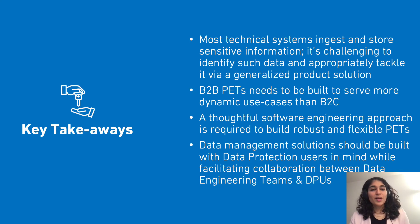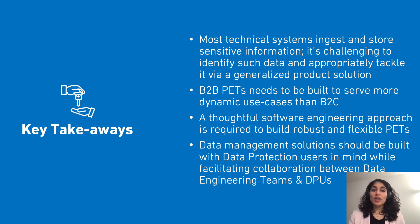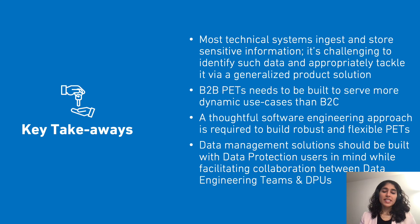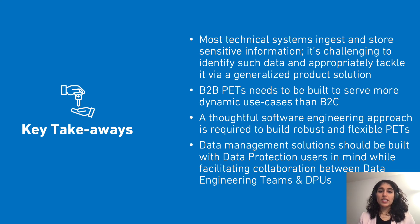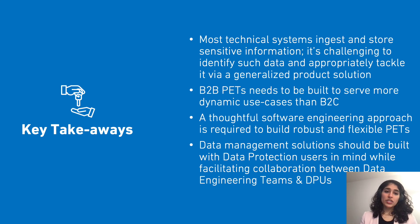That brings us to conclusions. Most technical systems ingest and store sensitive information. It's challenging to identify such data and appropriately tackle it via a generalized product solution. We walked through specifics of how to break down the problem and what a potential solution can look like. B2B privacy enhancing technology needs to be built to serve more dynamic use cases than B2C, where often there are innate limits to how the system can be deployed or used. A thoughtful software engineering approach is required to build robust and flexible privacy enhancing technologies. Traditional approaches often end up with restrictive software that is not useful enough, or worse, functional software which undermines user privacy. We highlighted this by ensuring that the solution offers maximum customization for defining sensitive data, also for determining actions that should be taken post-detection, and while thinking through additional considerations of the solution within a data platform.